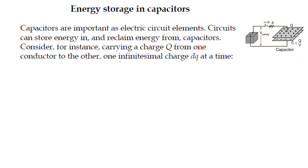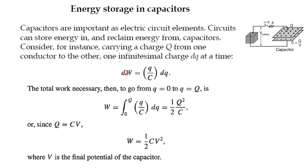Now we find the energy stored in a capacitor. Capacitors are important circuit elements that can store energy. To charge a capacitor from 0 to Q, we bring a small charge dQ at a time, requiring work dW equal to (Q/C) dQ. The total work integrating from 0 to Q is W equal to half Q squared by C. Since Q equal to CV, this gives W equal to half CV squared. This is the energy stored in a capacitor.